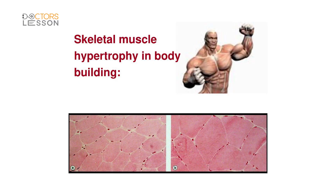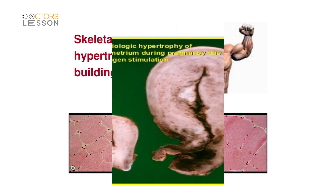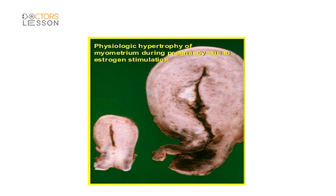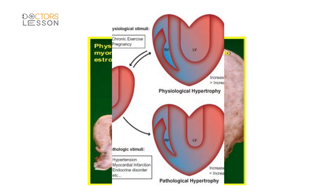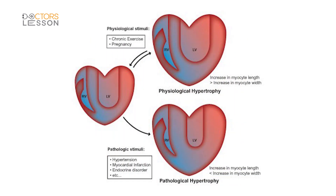The most common example of physiological hypertrophy is the bulging skeletal muscle of bodybuilders or athletes. Regular exercise causes increased metabolic activity of their muscle fibers, which leads to hypertrophy of skeletal muscle cells. Estrogen hormone causes hypertrophy of myometrial smooth muscles, leading to increased size of the uterus during pregnancy.